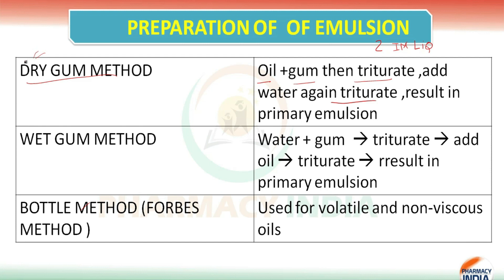So the first method is the dry gum method. In the dry gum method, first of all we take oil plus gum and triturate. After trituration, add water and triturate again. The result is the formation of a primary emulsion in the dry gum method.